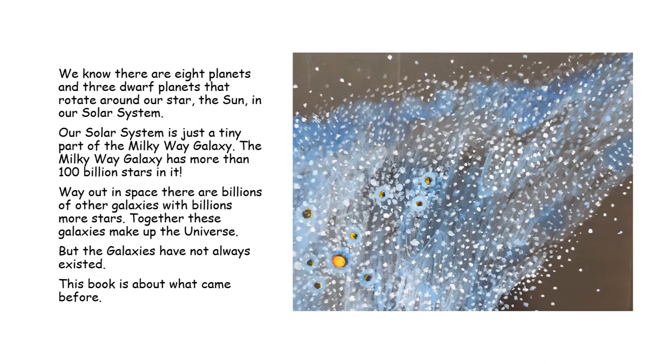We know there are eight planets and three dwarf planets that rotate around our star, the Sun, in our solar system. Our solar system is just a tiny part of the Milky Way galaxy. The Milky Way galaxy has more than 100 billion stars in it. Way out in space, there are billions of other galaxies with billions more stars. Together, these galaxies make up the universe. But the galaxies have not always existed. This book is about what came before.